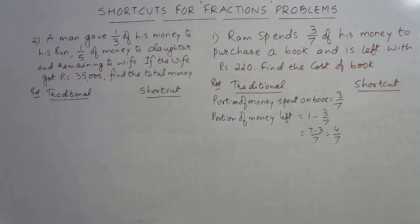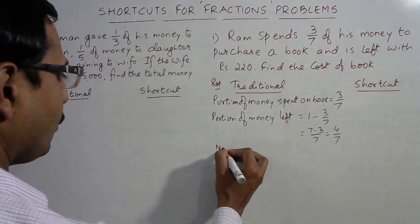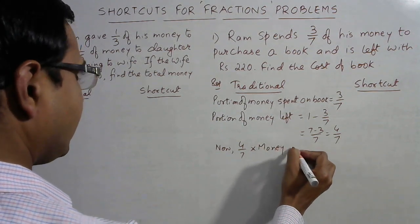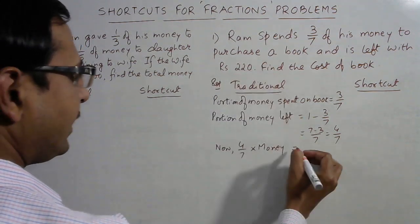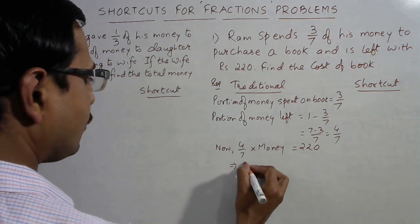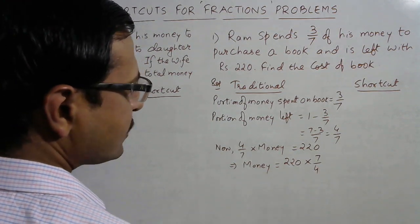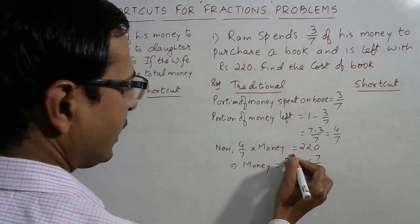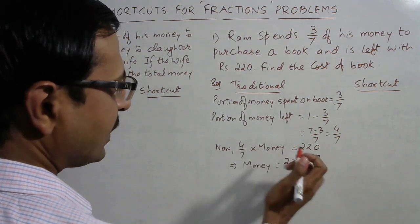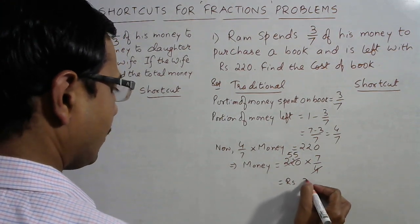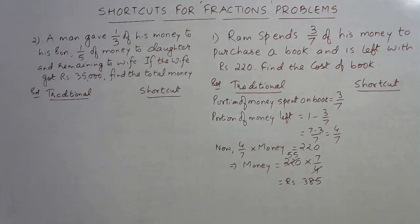So 4/7 is the portion of money left with him after spending on the book. Now, 4/7 of the total money is ₹220. So total money = 220 × (7/4). Cancelling, that's 55 × 7 = ₹385. This is the total amount of money he had.